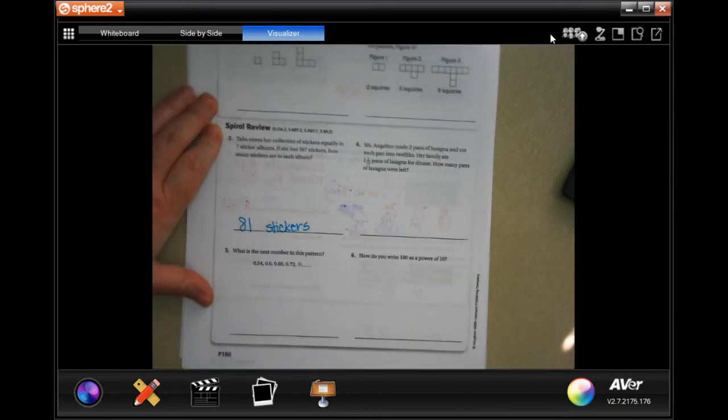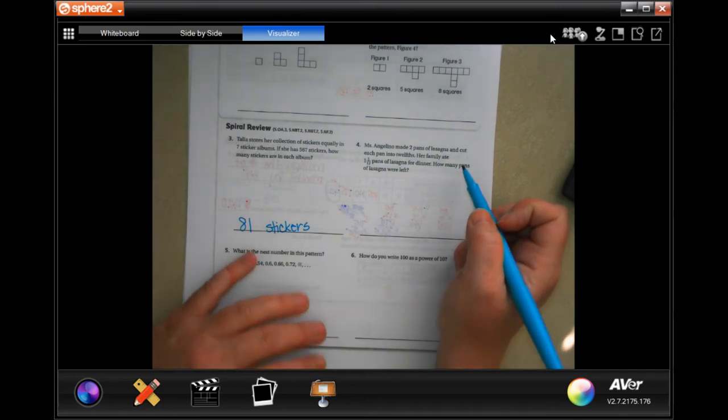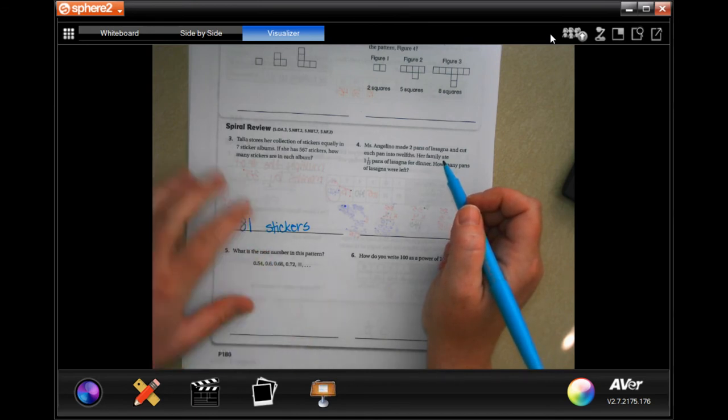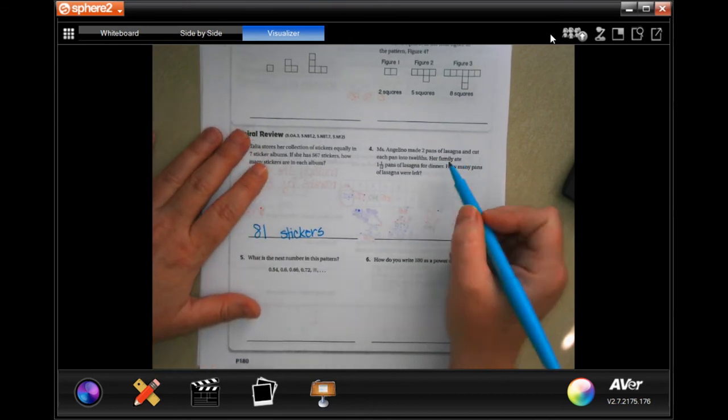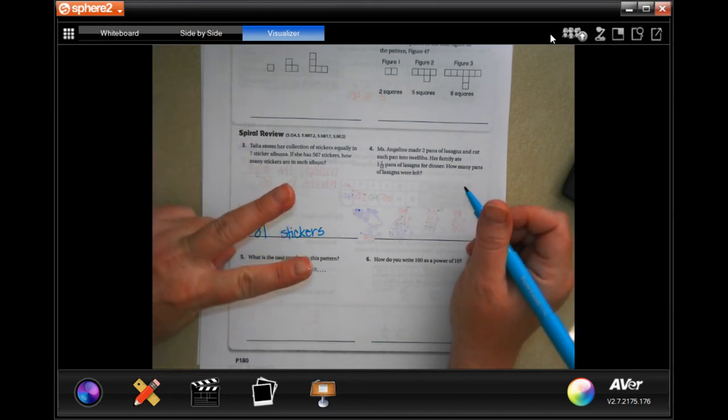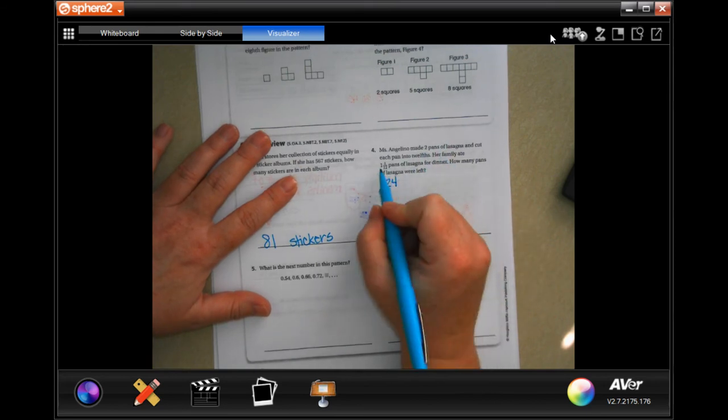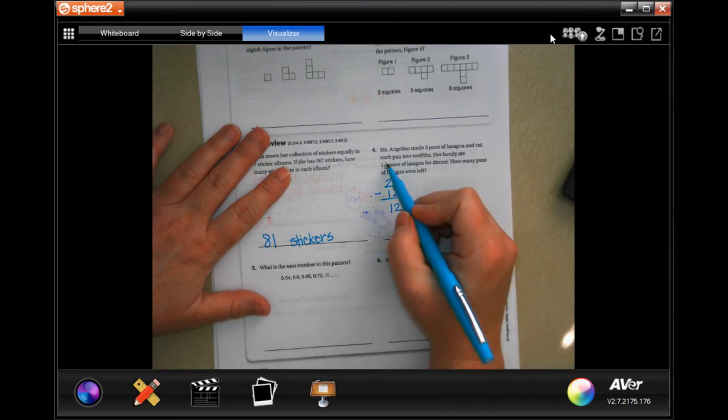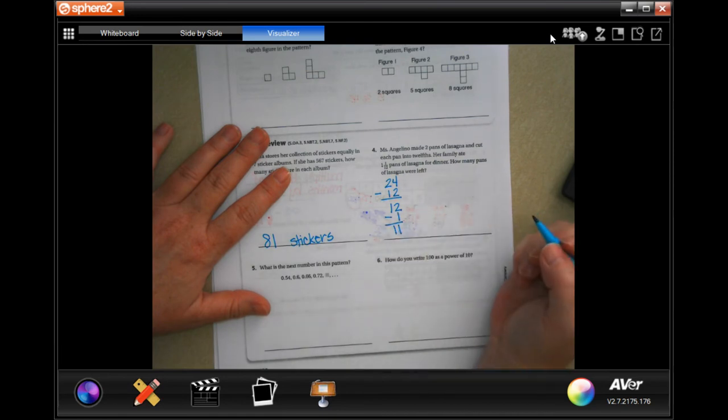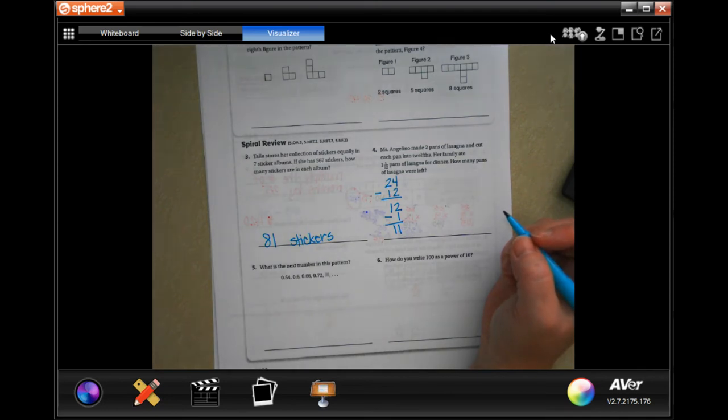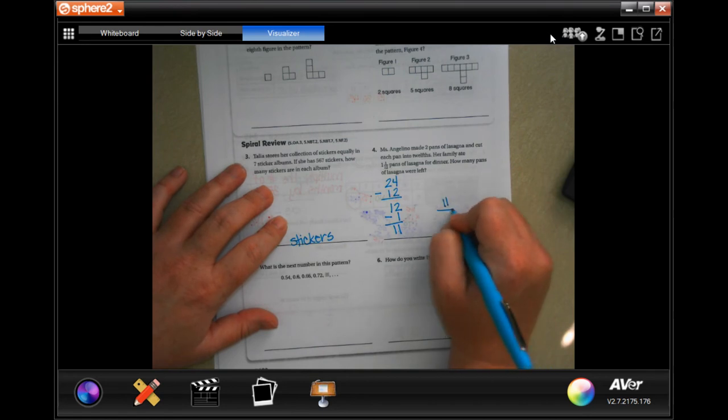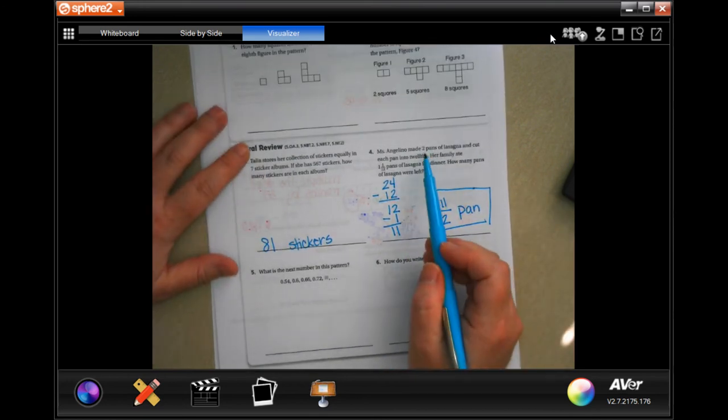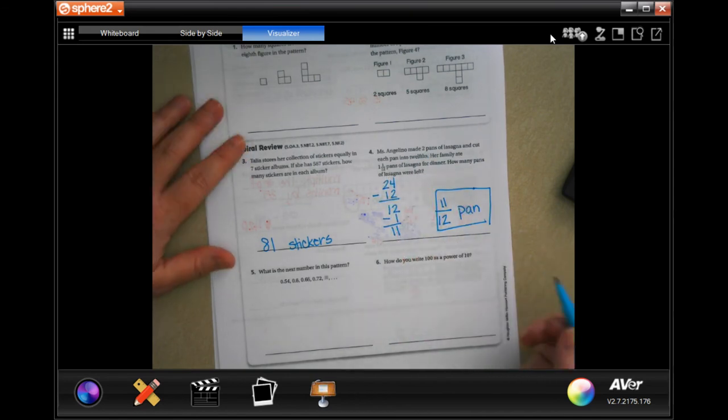Miss Angelina made two pans of lasagna and cut each pan into 12s. Her family ate one and 1/12 pan of lasagna for dinner. How many pans of lasagna were left? She made two pans and cut each one into 12, so 2 times 12 is 24. They ate a whole one so we take away 12, we're back to 12. Then they ate another one, so there's 11 left. There's 11 in one pan and 12 in the other pan.